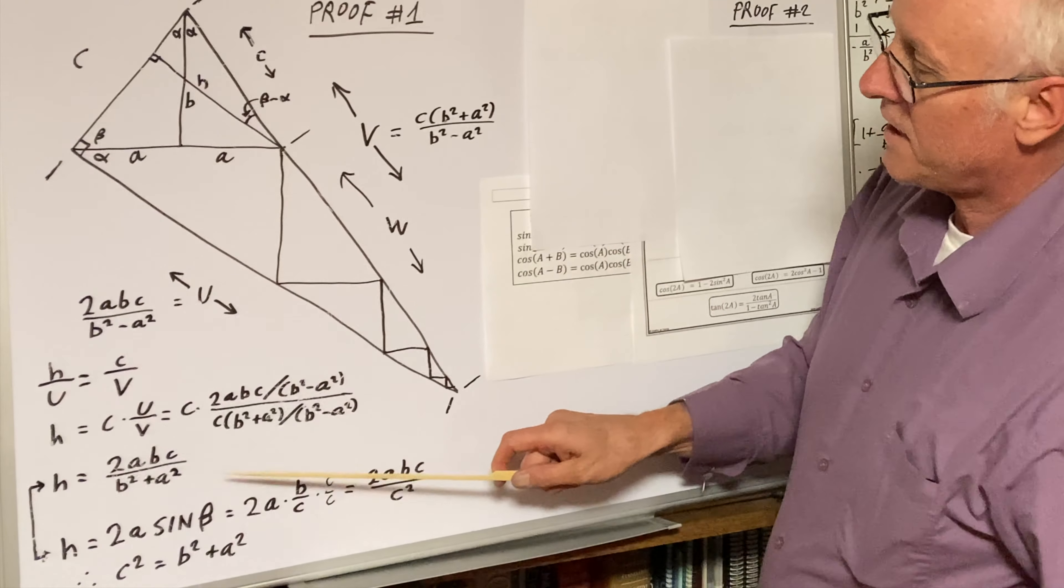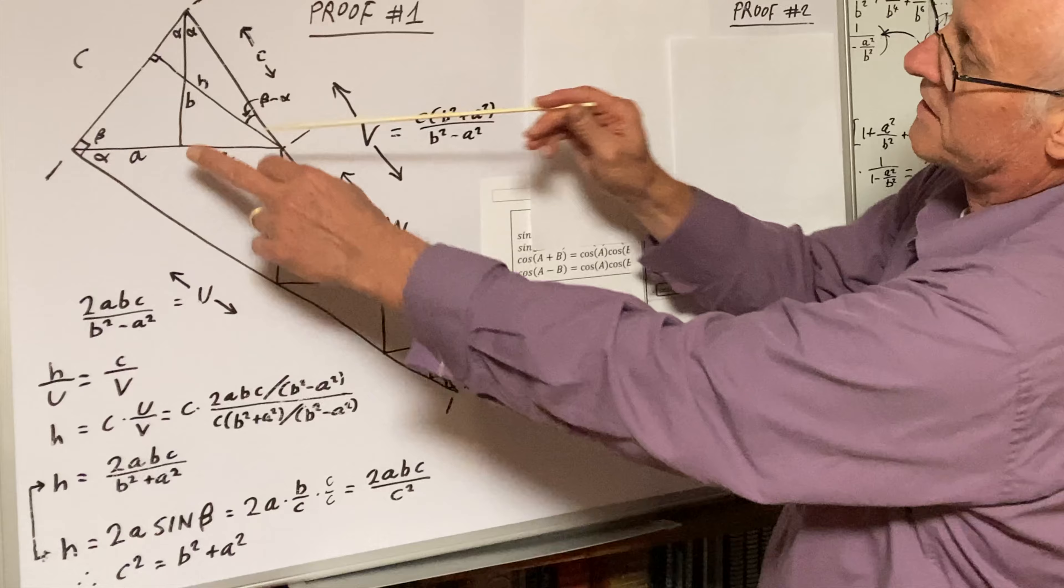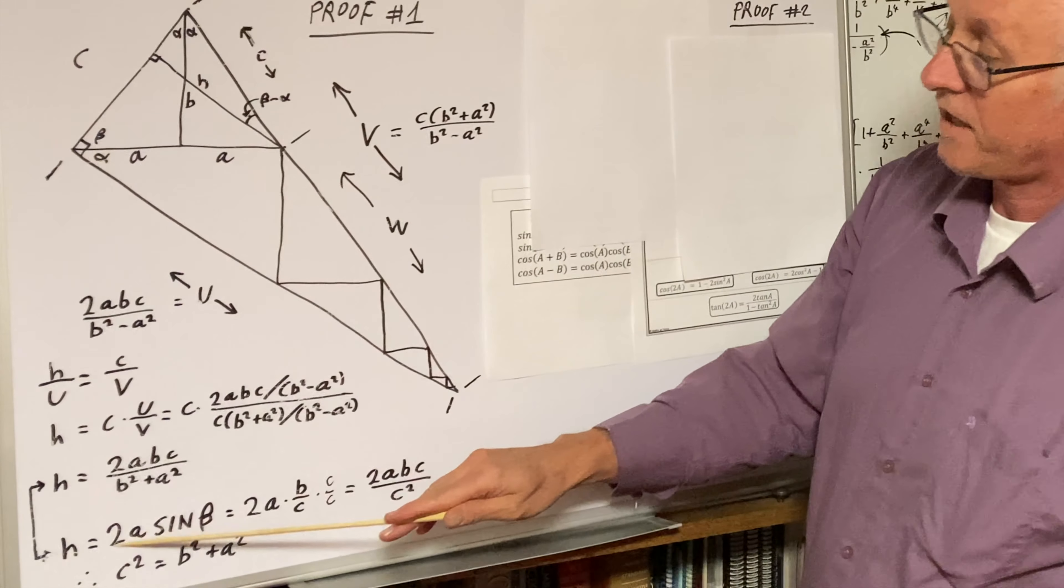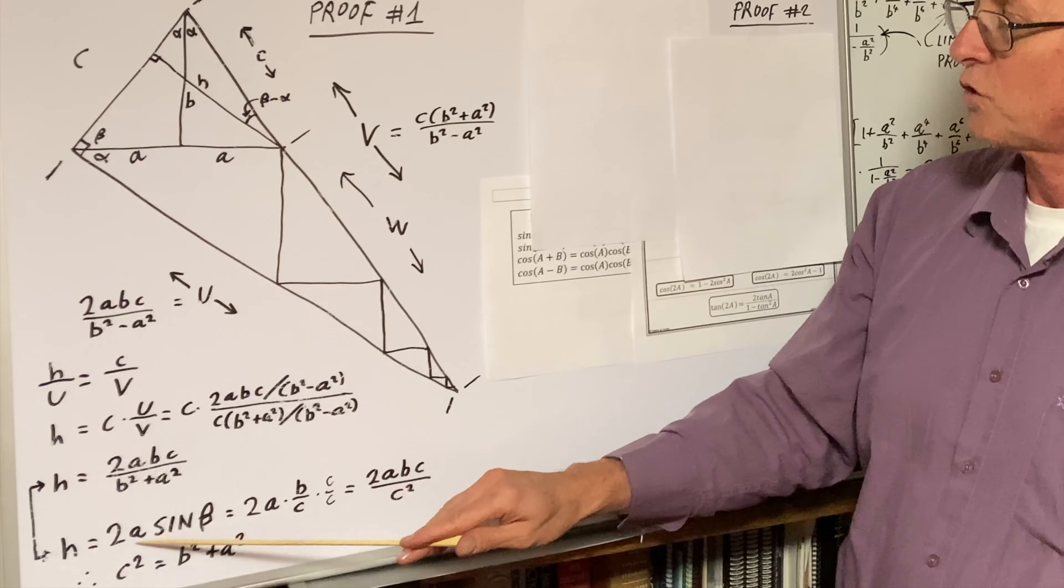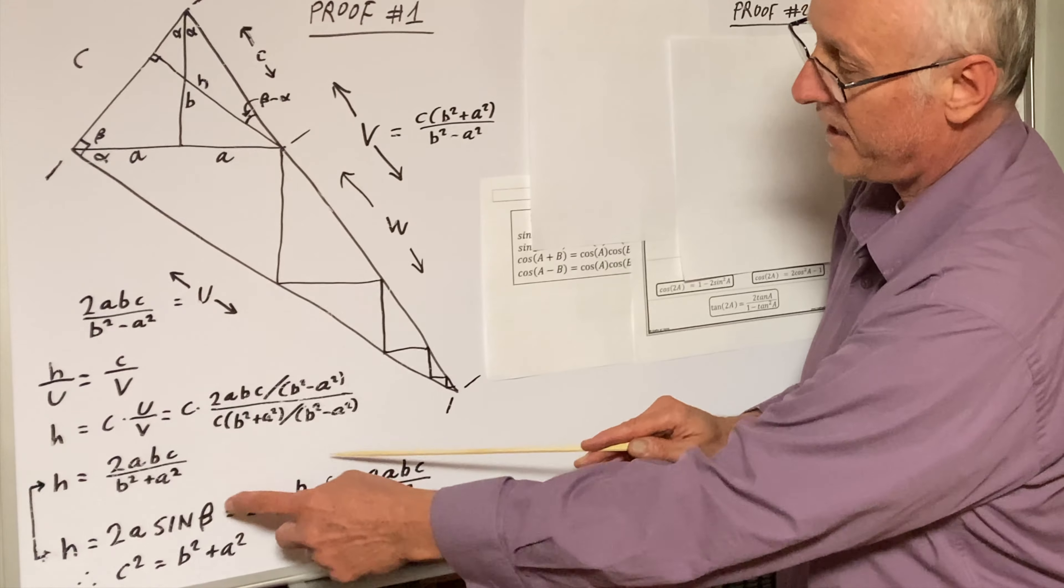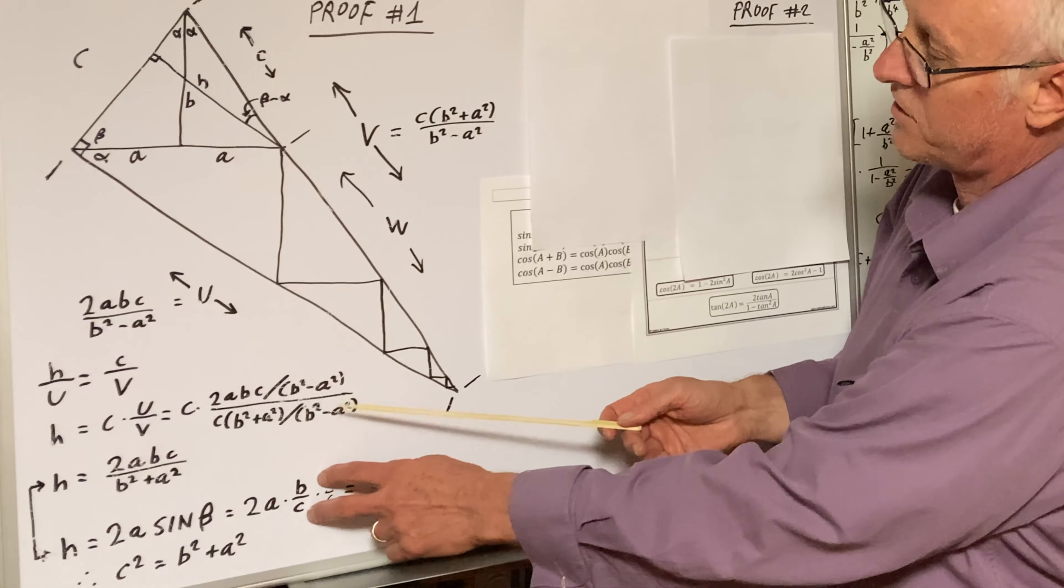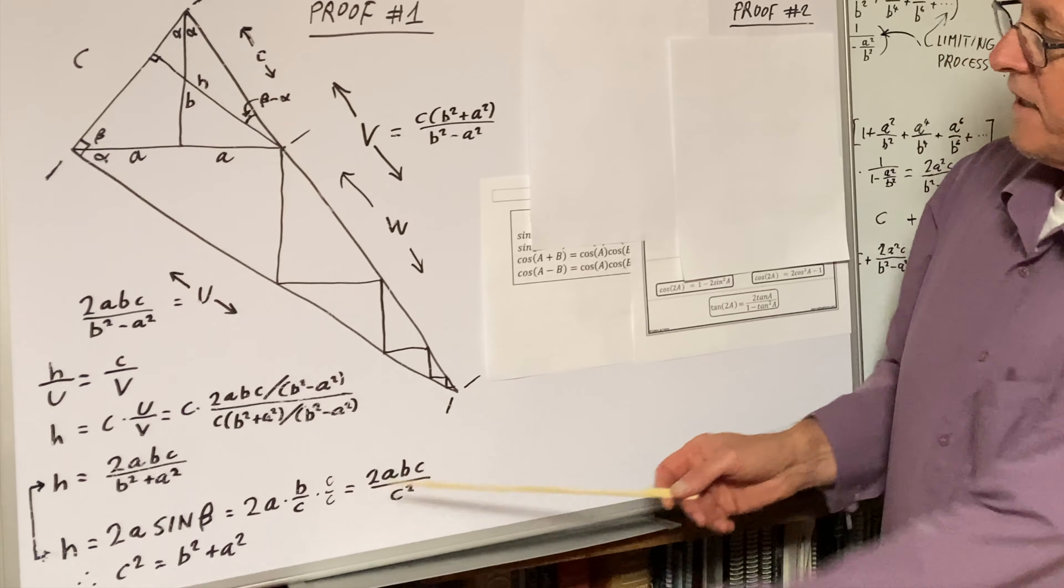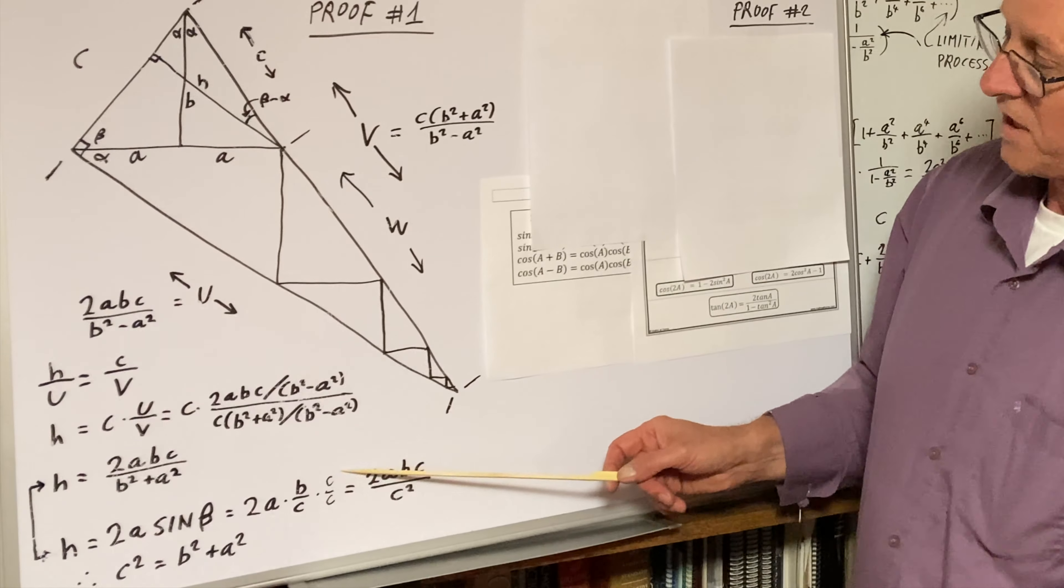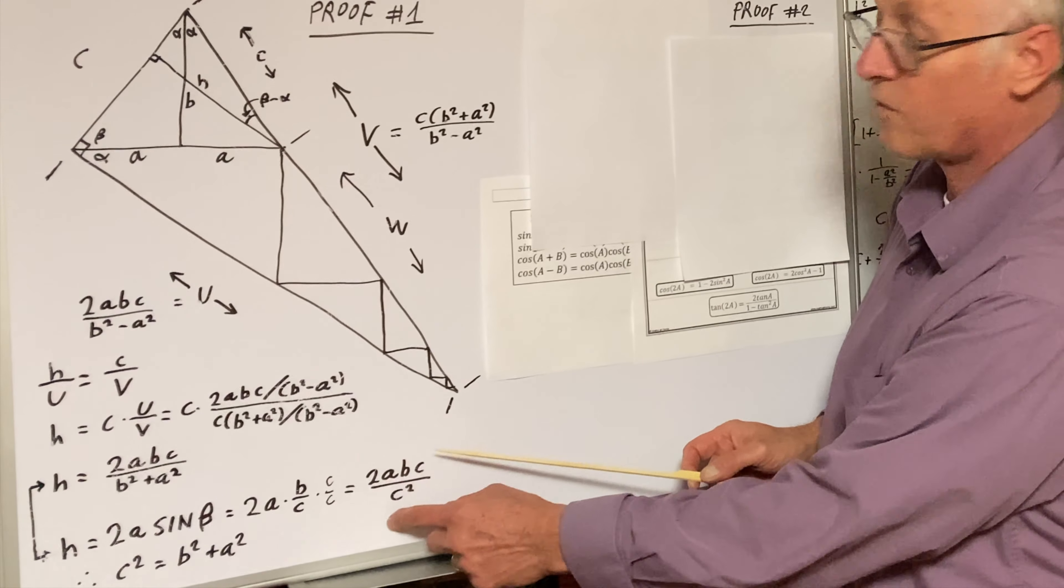Now let's look at it from the sine beta. Here's beta. Sine beta is opposite H over hypotenuse 2a. Therefore, H equals 2a times sine beta. We know what beta is. Beta is B over C, the basic definition of sine beta. If we do this trick of multiply by C over C, we get 2abc over C squared.